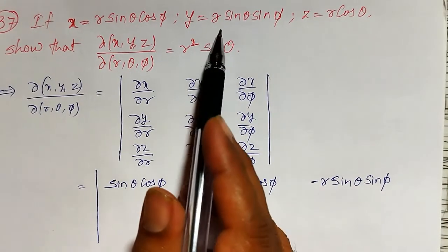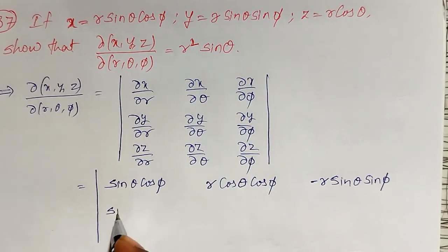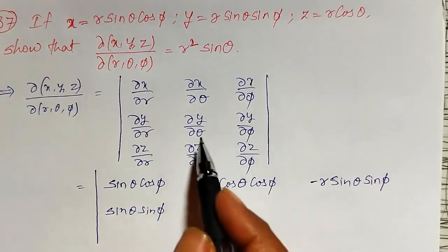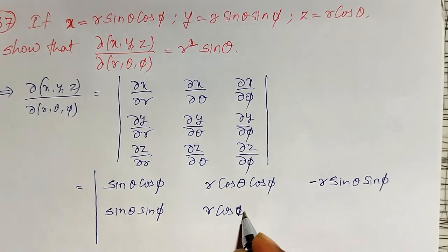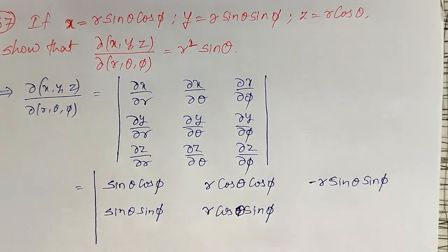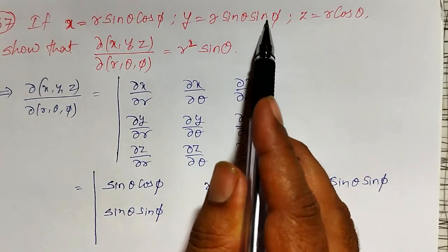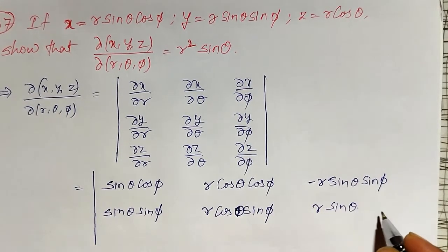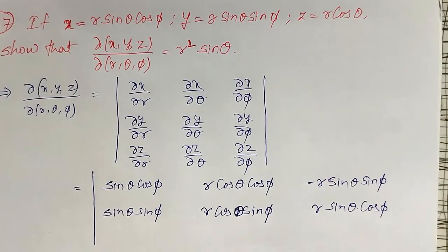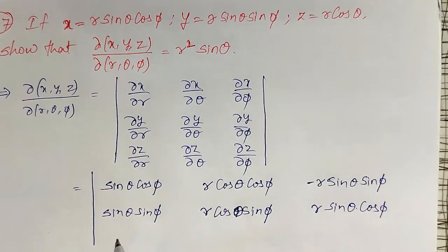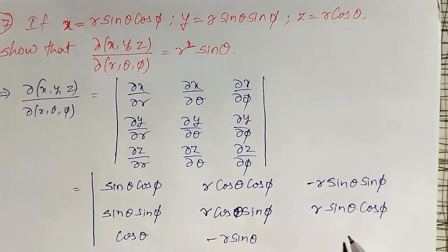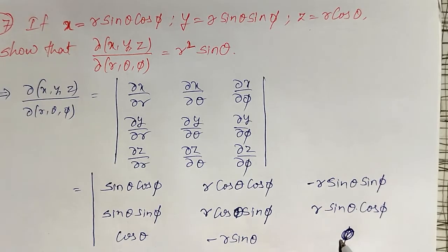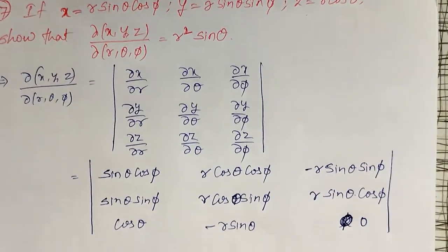For y = r sinθ sinφ: ∂y/∂r = sinθ sinφ. For ∂y/∂θ, r and sinφ are constant and differentiation of sinθ gives cosθ, so ∂y/∂θ = r cosθ sinφ. For ∂y/∂φ, differentiation of sinφ gives cosφ, so ∂y/∂φ = r sinθ cosφ. For z = r cosθ: ∂z/∂r = cosθ, ∂z/∂θ = −r sinθ, and ∂z/∂φ = 0 since there is no φ term.